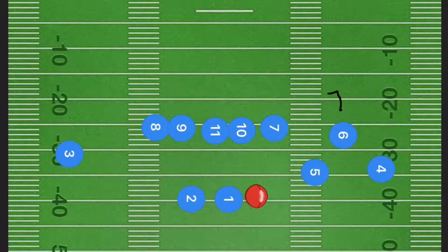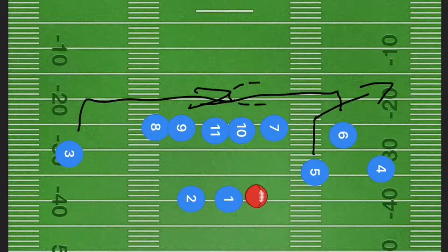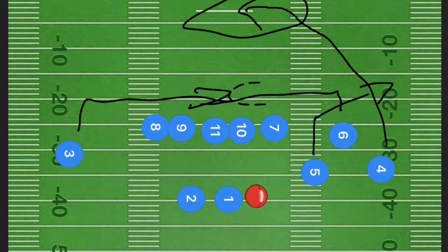In this next play, players six and three are crossing at roughly the five to ten yard mark. Player five is going out towards the sideline, and player four is arcing across the field at around the 15-yard mark. What we are looking for here is player four open downfield or player five along the sideline.